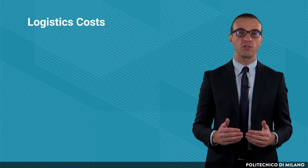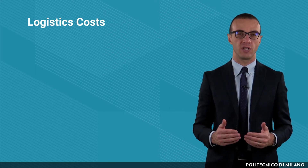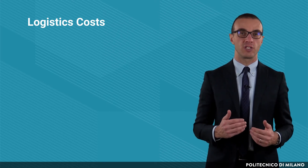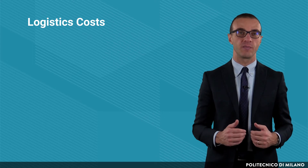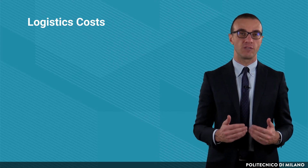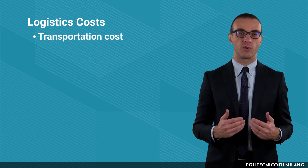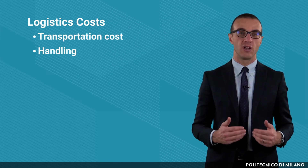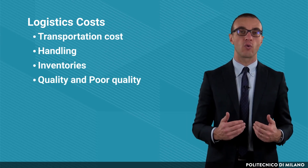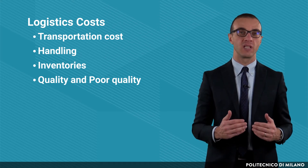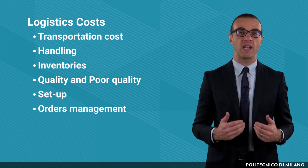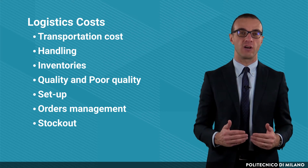Let's now consider two elements of internal performances: logistics costs and productivity. Logistics costs measure the cost of the resources — such as labor, transportation means, plants, and energy — needed to create the output of the process. The main logistics costs are transportation costs, handling costs, cost of inventories, cost for quality and cost for poor quality, setup costs, cost for managing orders, and the cost of stockouts.